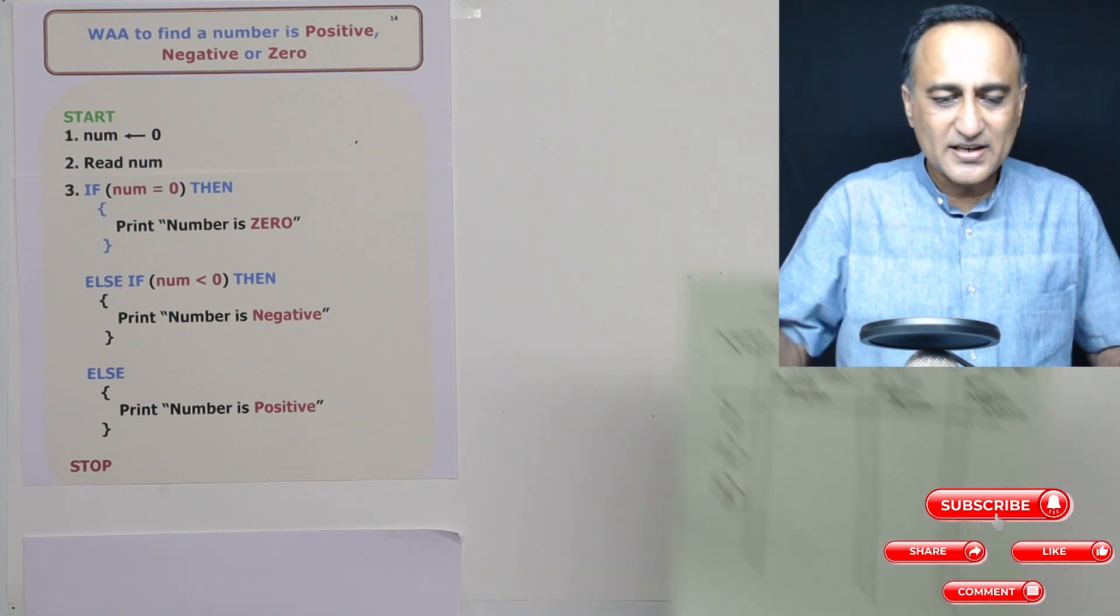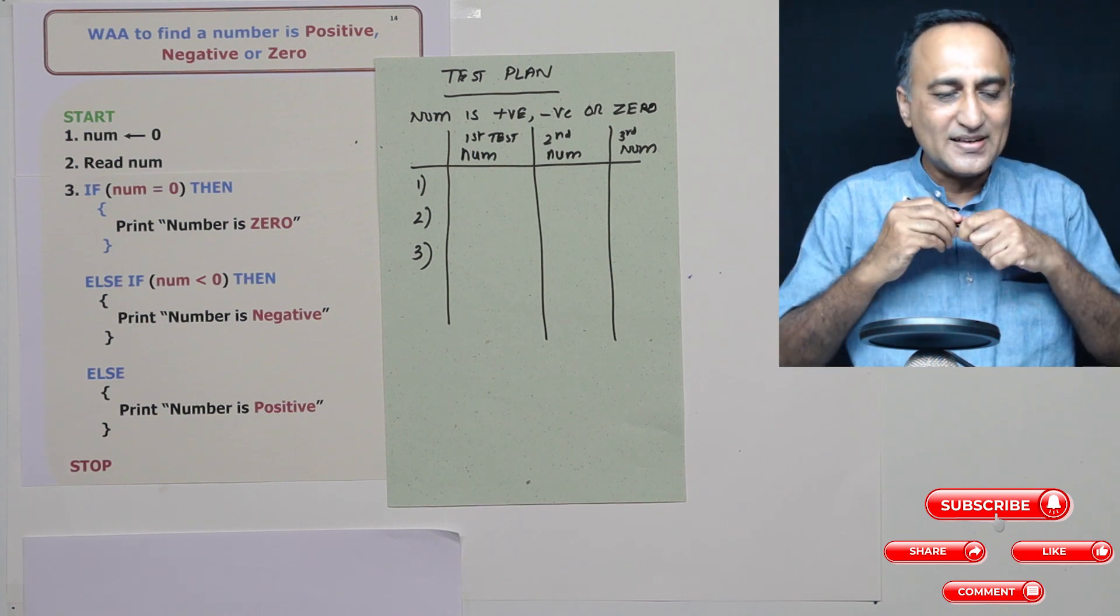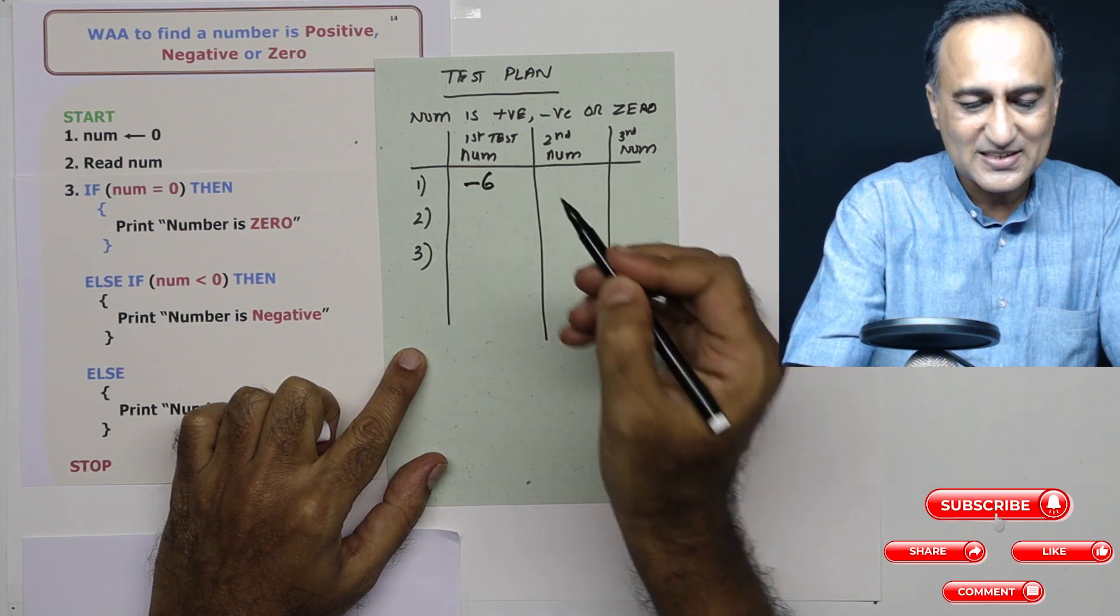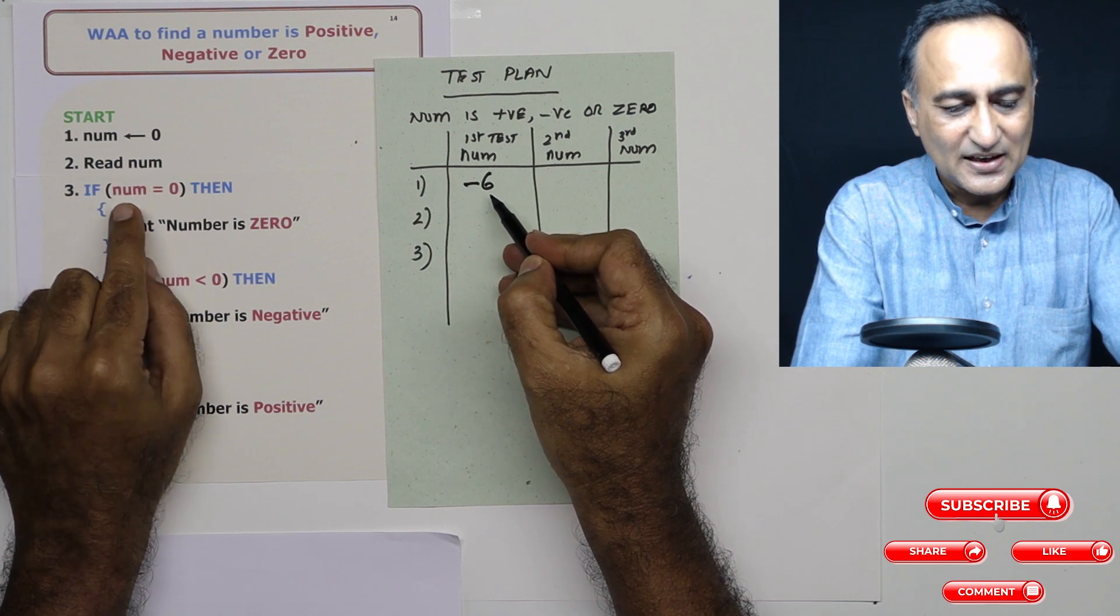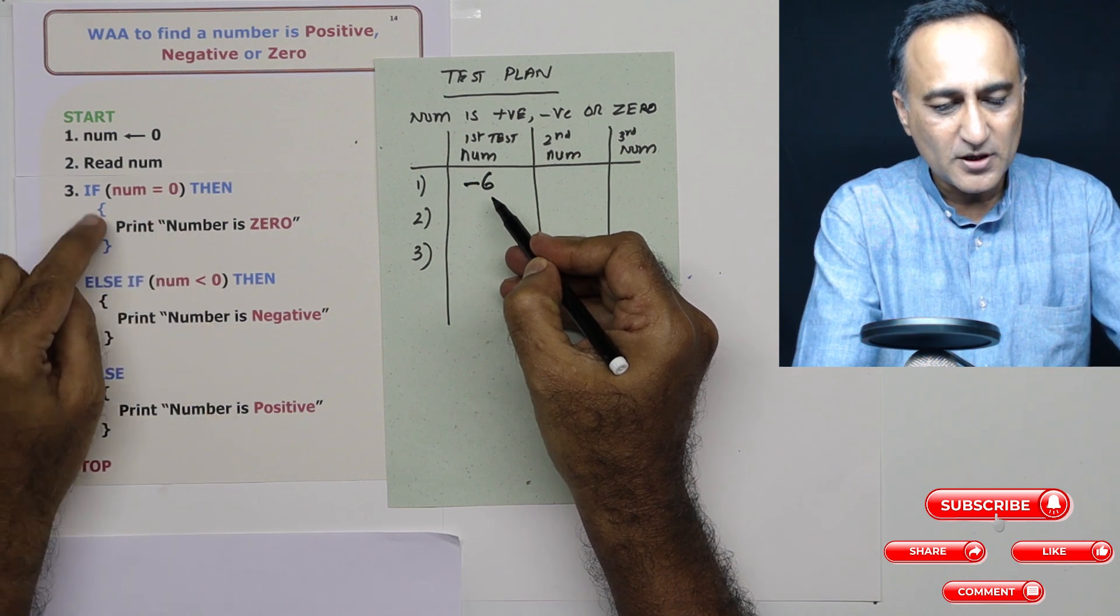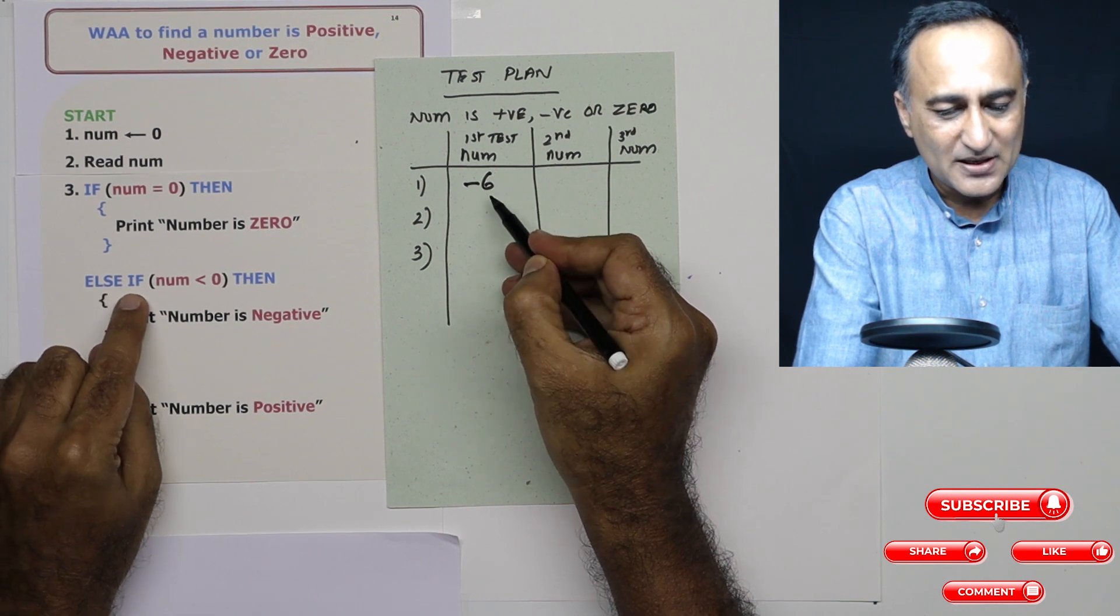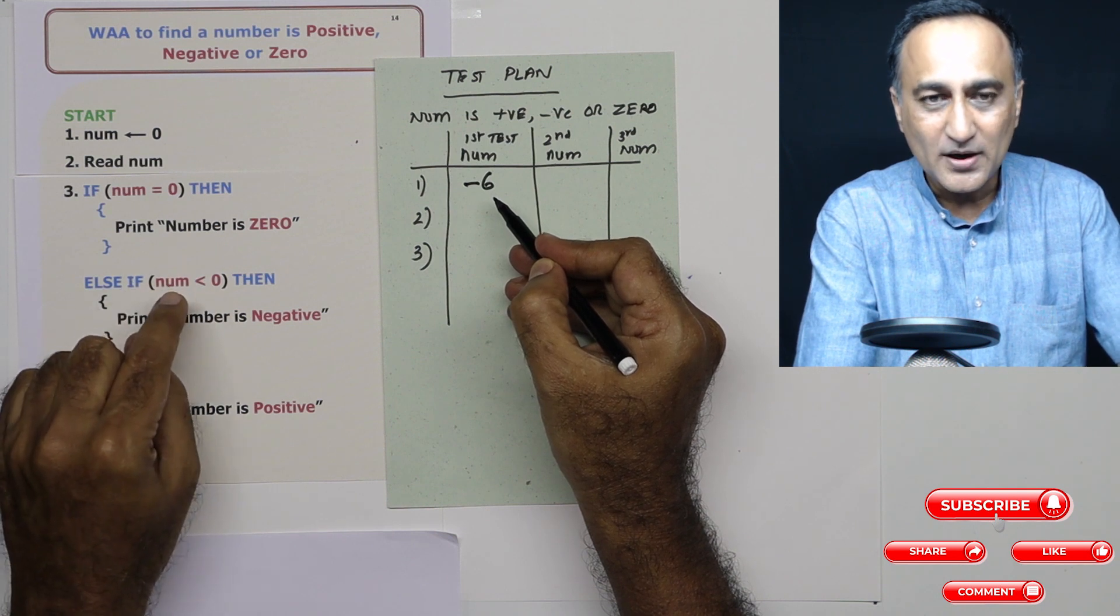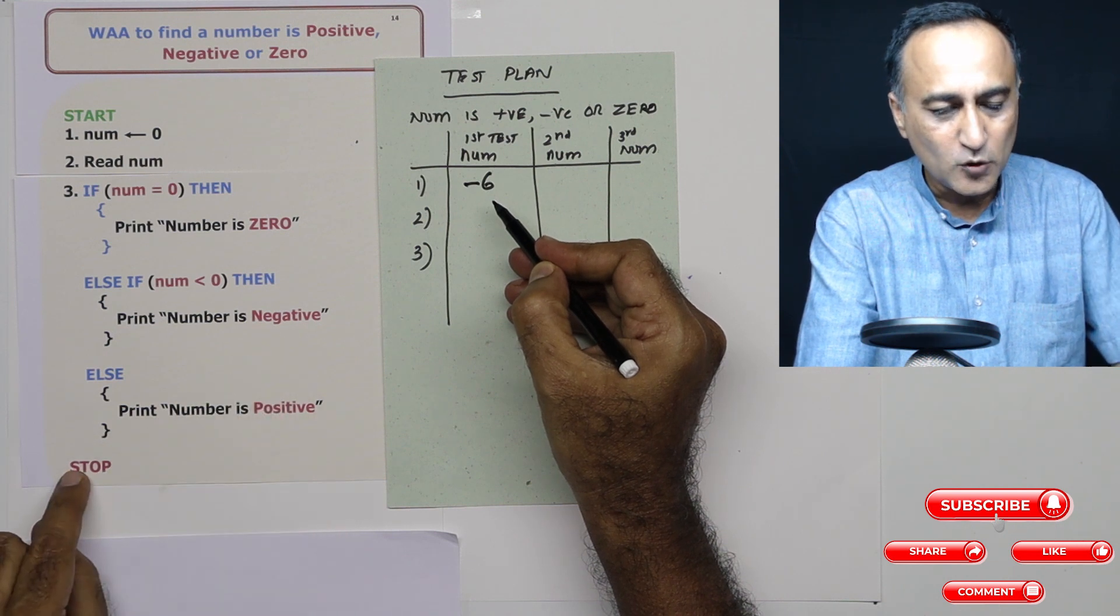As usual, in order to understand the working of logic, it is really important that we go ahead and try to give it certain test cases. Let's take a number minus six. So I am reading a number, number is minus six. Minus six is equal to zero, true or false? It is false. So this does not get executed. It comes here, else if number is minus six, is minus six less than zero? Now this part is true. So it is going to say print number is negative and then going to come to stop.